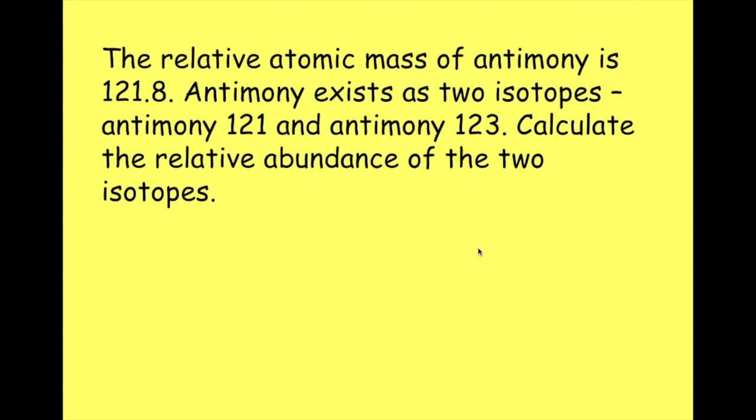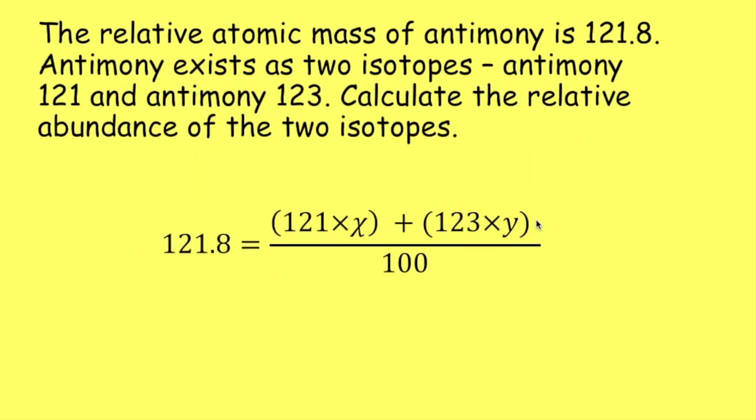One way to come up with an answer quickly by guessing. We could write out that equation there and we could have a guess. We could have an educated guess because, well, we know it's not 50-50. We've got 121 times x plus 123 times. Well, if that was 50-50, the answer would be 122. So actually we know that there must be more x than there is y.